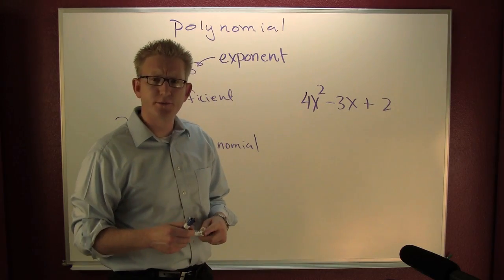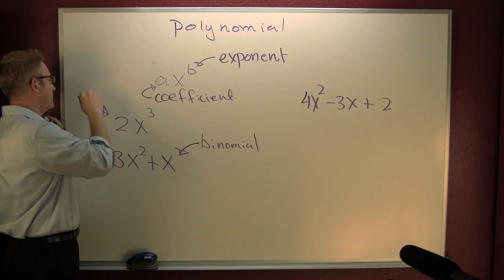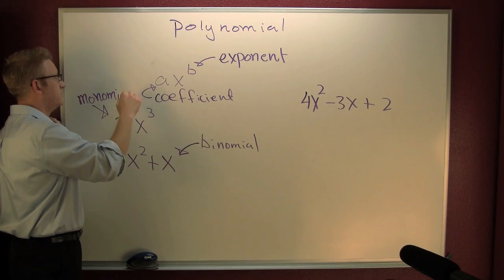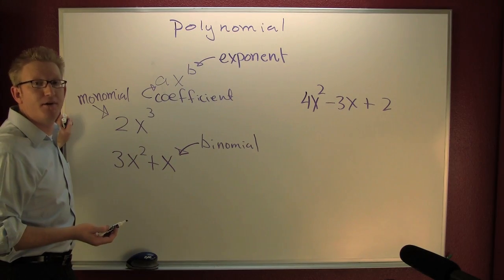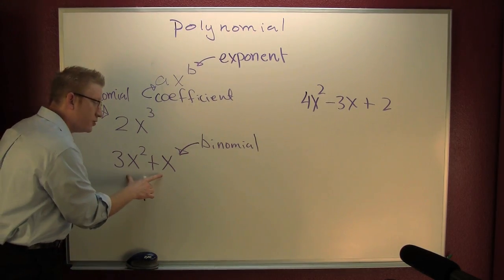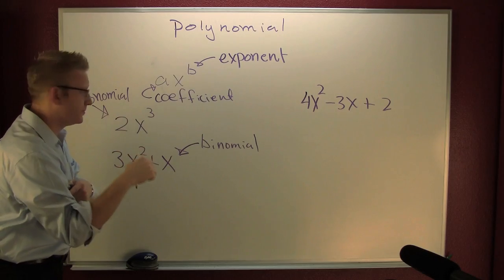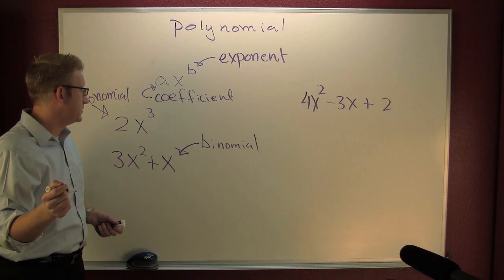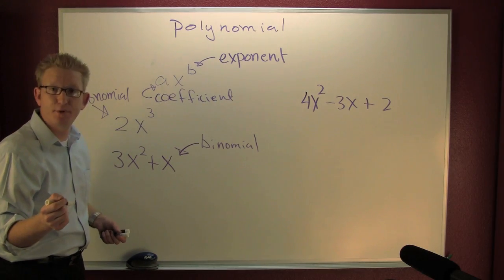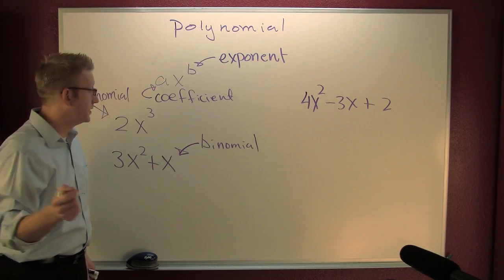What's a polynomial with two terms called? A polynomial with one term is a monomial. Think monocular, or monogamy, or monopoly. A polynomial with two terms is called a binomial. Think of bicep — there's two of them. Bisect, like in the line. Bifocal. Biplane. Biped. I'm sure there are a couple more you can think of with the prefix bi.